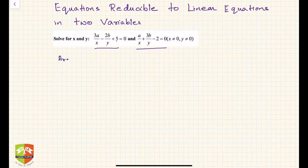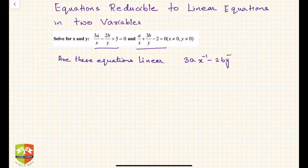So first question is, are these equations linear? Clearly they are not. Why? Because if you see the first equation is of the form 3x to the power negative 1 minus 2by to the power negative 1 plus 5 equals 0.